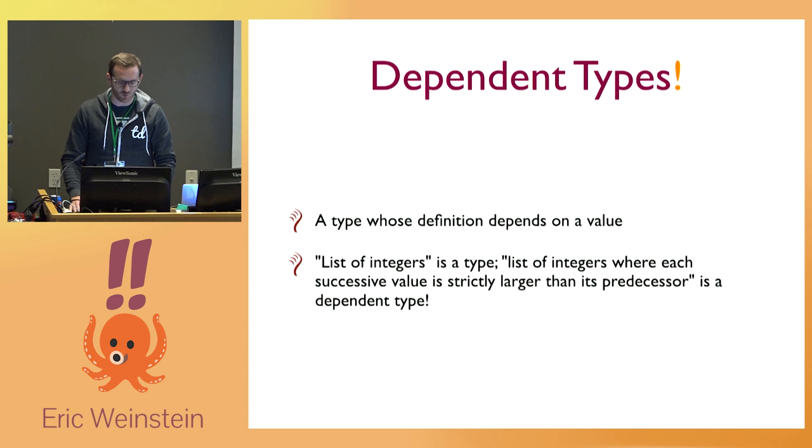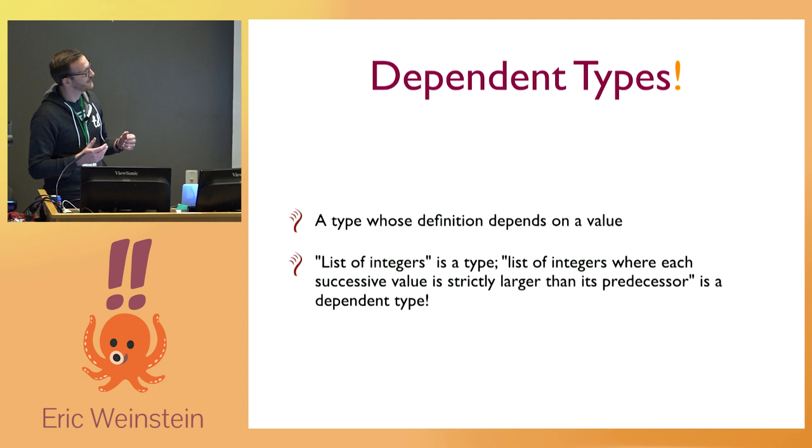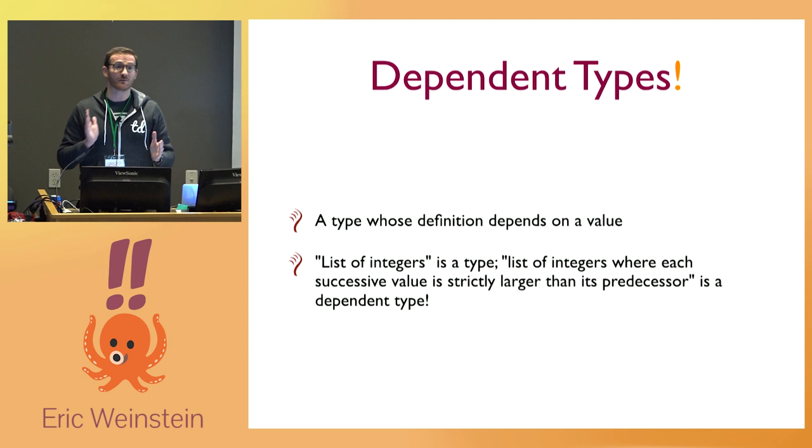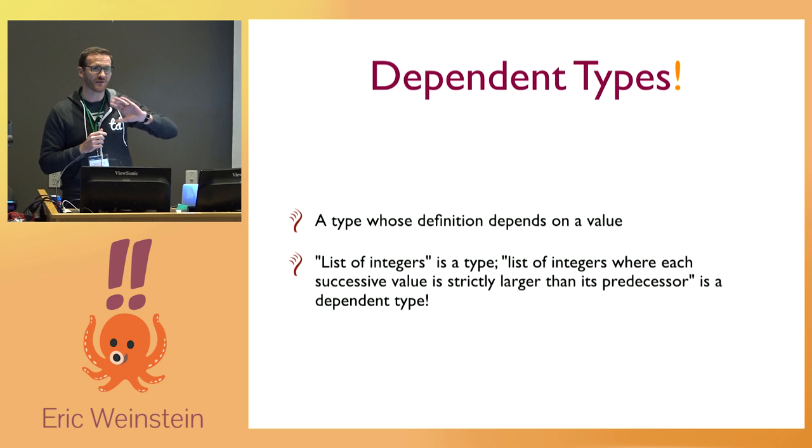Most of us are familiar with type systems and the idea of types in programming languages. A dependent type is a type that depends on a value. So rather than just a list of integers, you can have a dependent type where you say a list of integers where each entry is strictly larger than the one before it — a monotonically increasing sequence — or a pair where the second value has to be larger than the first.